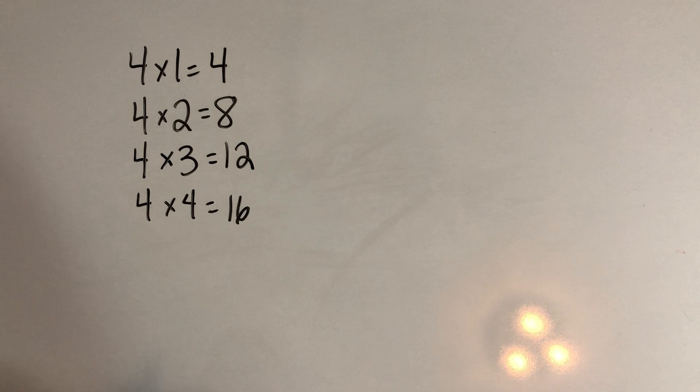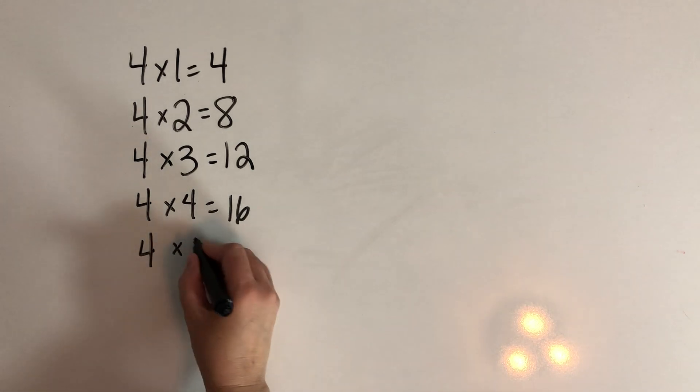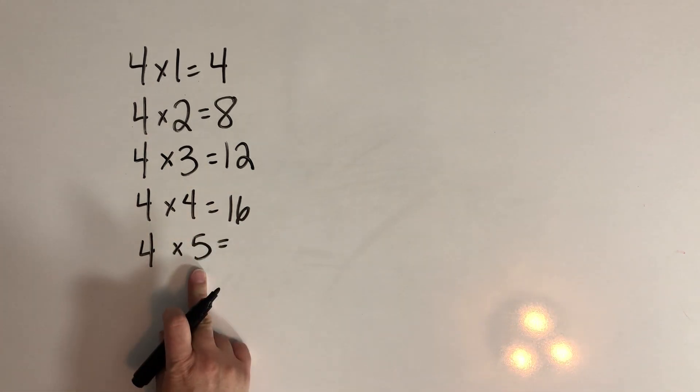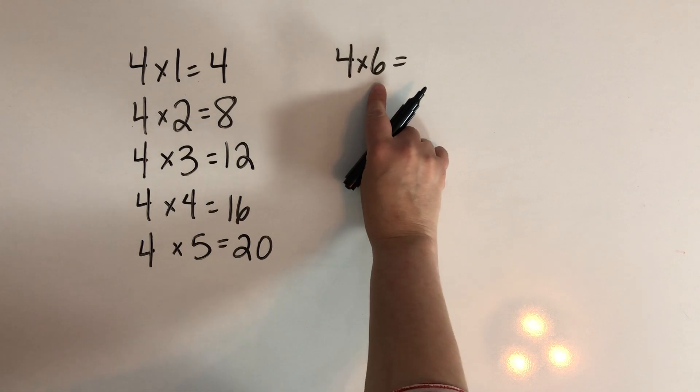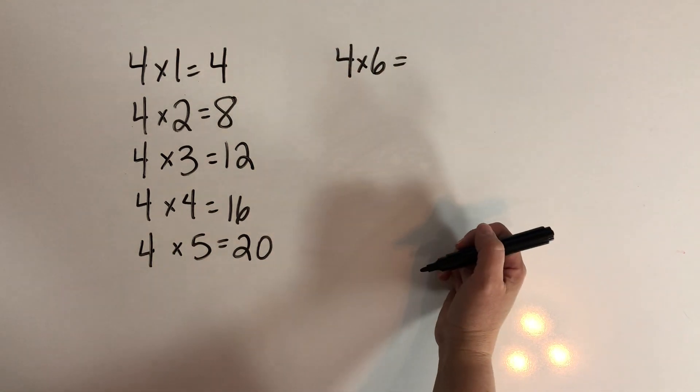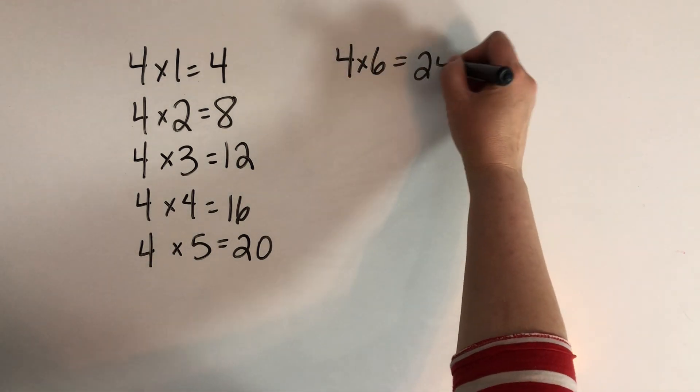All right, four times five. We'll double the five to make ten and double the ten to make twenty. Four times six: we'll double the six to make twelve and double the twelve to make twenty-four.